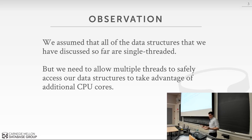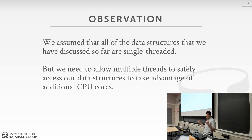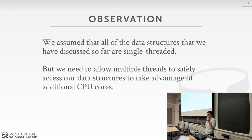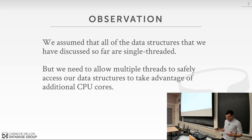You want to have as many threads as possible potentially reading and writing to your data structure at the same time, and you need to protect them from each other. It's not just about taking advantage of additional cores — these concepts we're talking about are old, from the 1970s. Back then you had one CPU socket with one core, but because we're a disk-oriented database, a thread could stall waiting for disk I/O, so we want other threads to run.